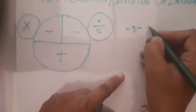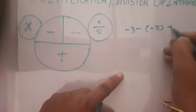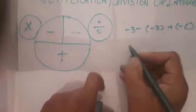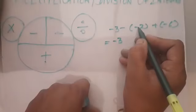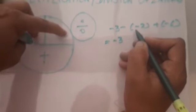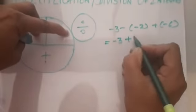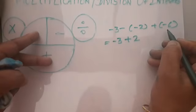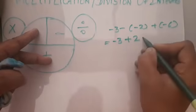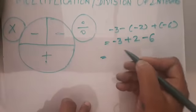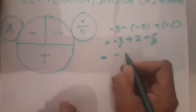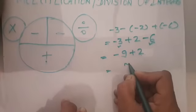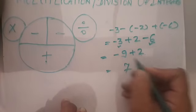One more example: minus 3 minus minus 2 plus minus 6. Remove the brackets: minus and minus becomes plus, so write plus 2. Plus and minus becomes minus, so write minus 6. Now find numbers with the same sign: minus 3 and minus 6 give minus 9. Minus 9 plus 2 — opposite signs — subtract: 9 minus 2 is 7. The bigger number has a minus sign, so the answer is minus 7.